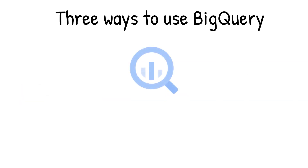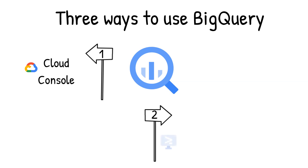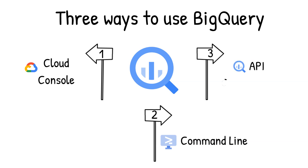Interacting with BigQuery to load data, run queries, or even create ML models can be done in three different ways. First is by using the UI in the Cloud Console. Second is by using the BigQuery command line tool. And third is by making calls to the BigQuery API using client libraries available in several languages.